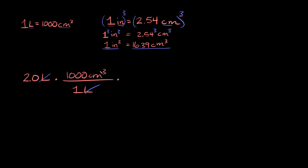We already have centimeters cubed on top from our first conversion, so we put 16.39 centimeters cubed on the bottom and 1 inch cubed on top. That way, the centimeters cubed on top and bottom cancel out. The units we're looking for are inches cubed, and we now have those on top — so we're done with our conversions.